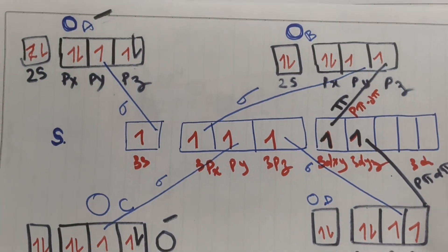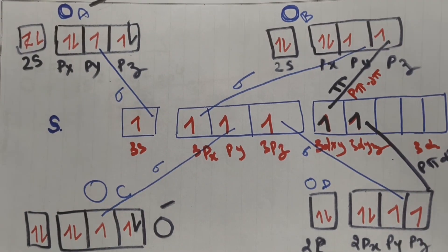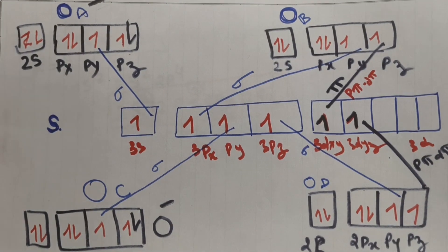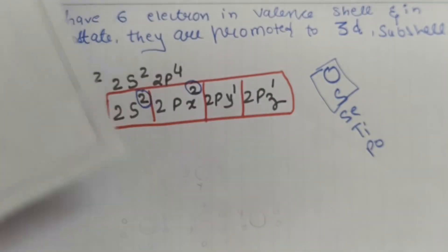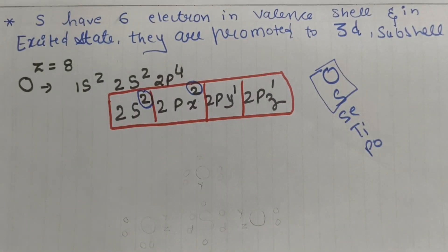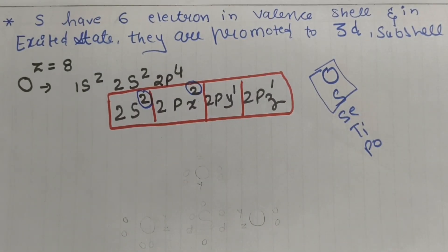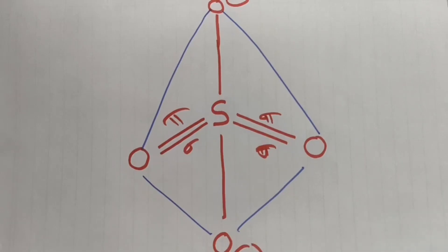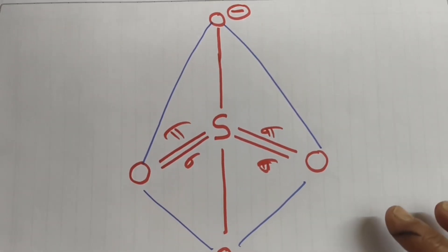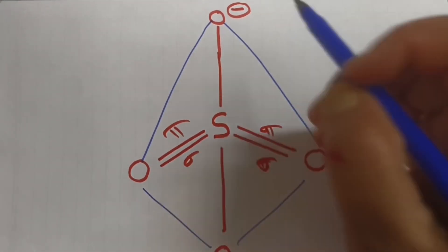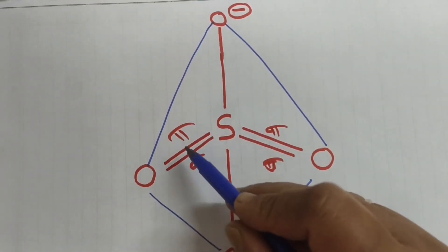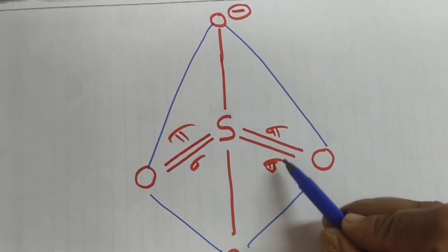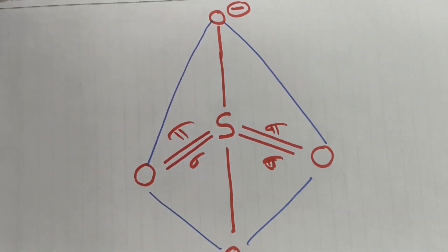The hybridization of sulfate is sp3, and the bond angle is 109.5°, the same as in a tetrahedral arrangement. The structure of sulfate can be drawn with two minus charges and two double bonds — each double bond consisting of one sigma and one pi bond.